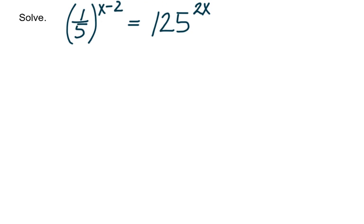Solve 1 fifth raised to the x minus 2 is equal to 125 raised to the 2x. So we want to use the uniqueness property, which tells us that if we can get the bases to be the same on the left and right, then our exponents will be equal.